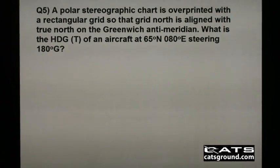In this question, a polar stereographic chart is overprinted with a rectangular grid so that grid north is aligned with true north on the Greenwich anti-meridian. What is the heading true of an aircraft at 65 degrees north, 080 degrees east, steering 180 degrees grid?